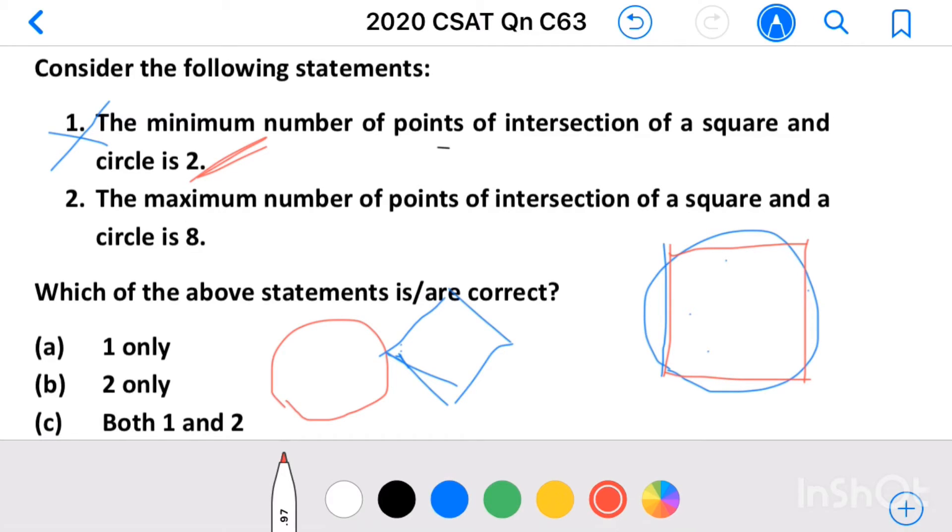Then number of intersections are 1, 2, 3, 4, 5, 6, 7, 8. Maximum possible intersection points of a square and circle equal to 8. Statement 2 is correct.